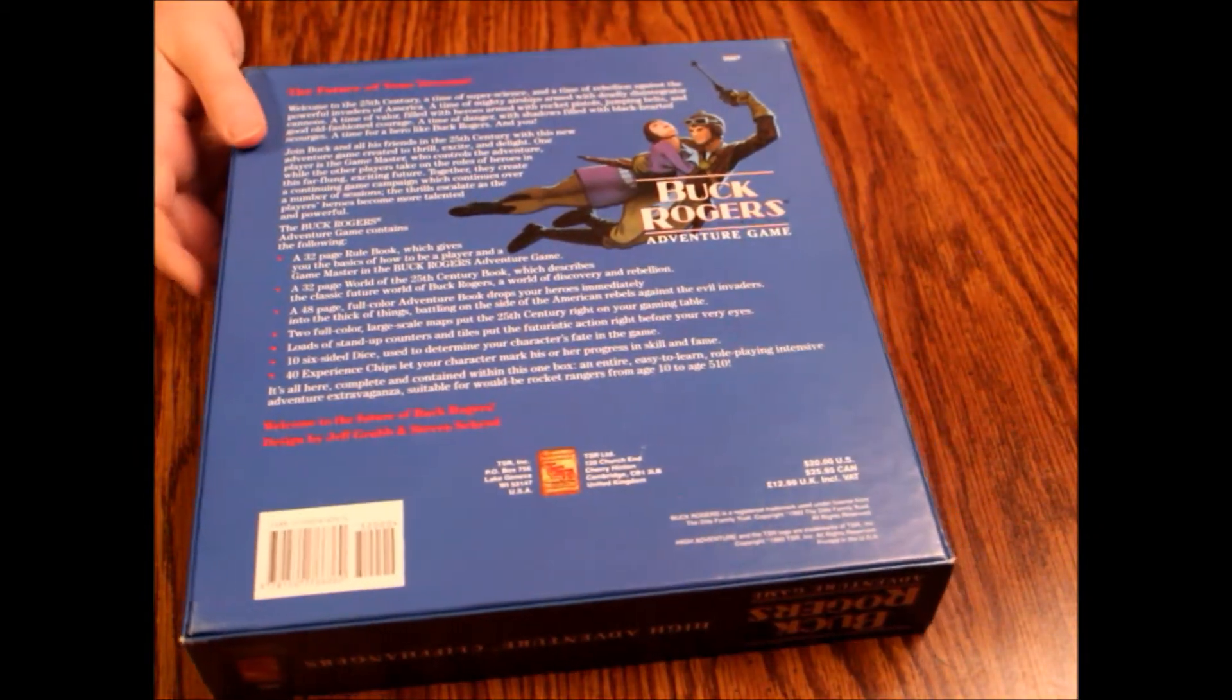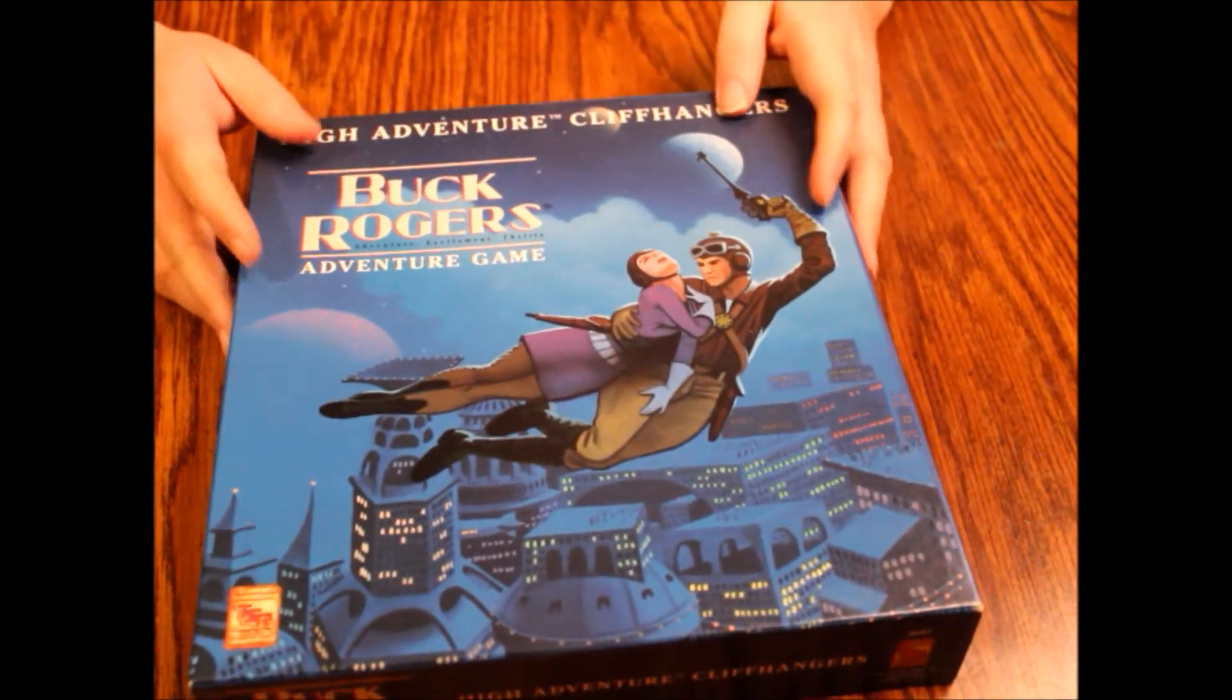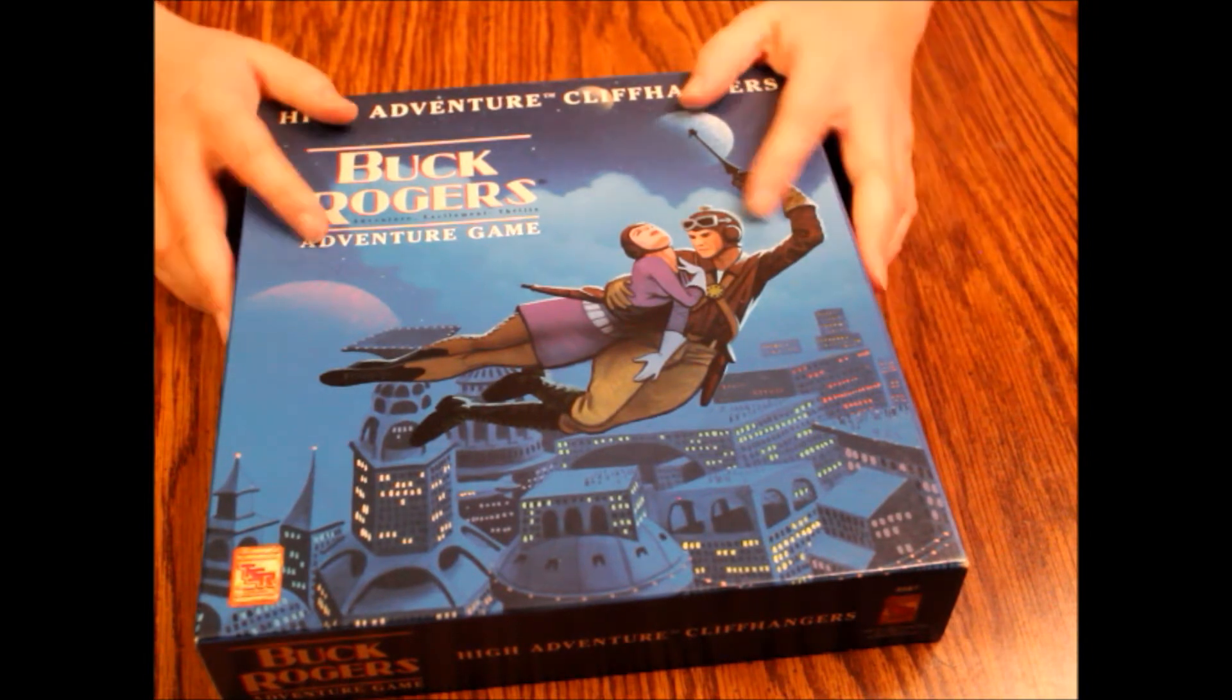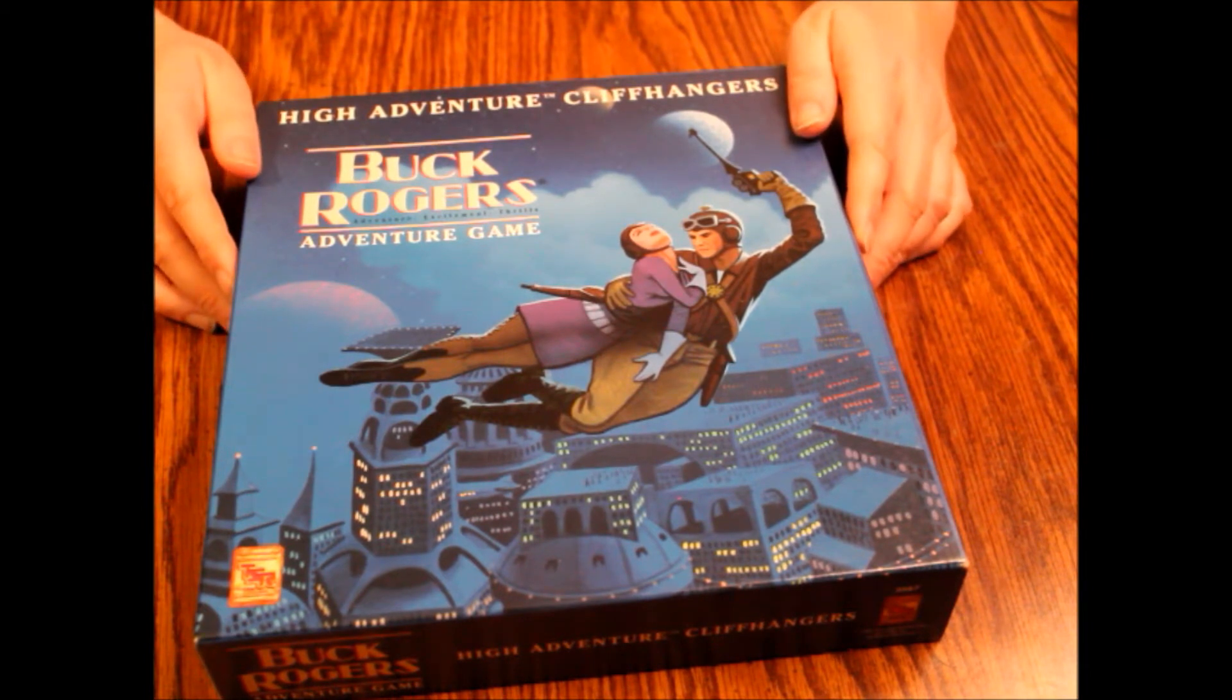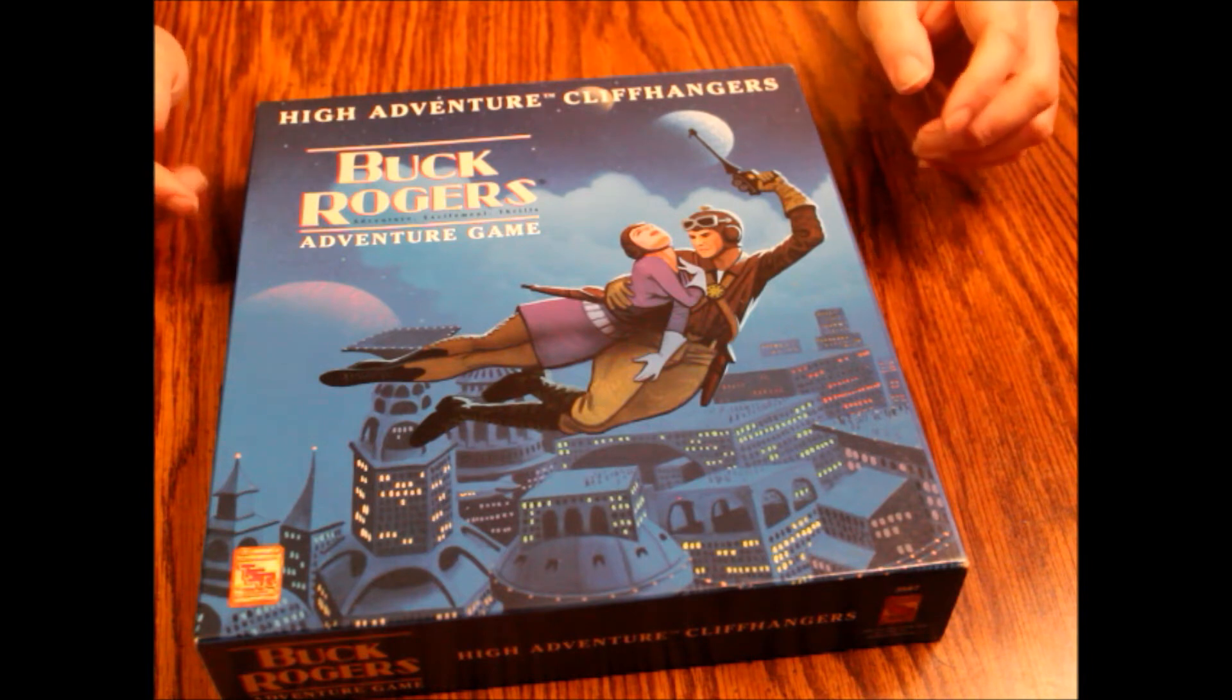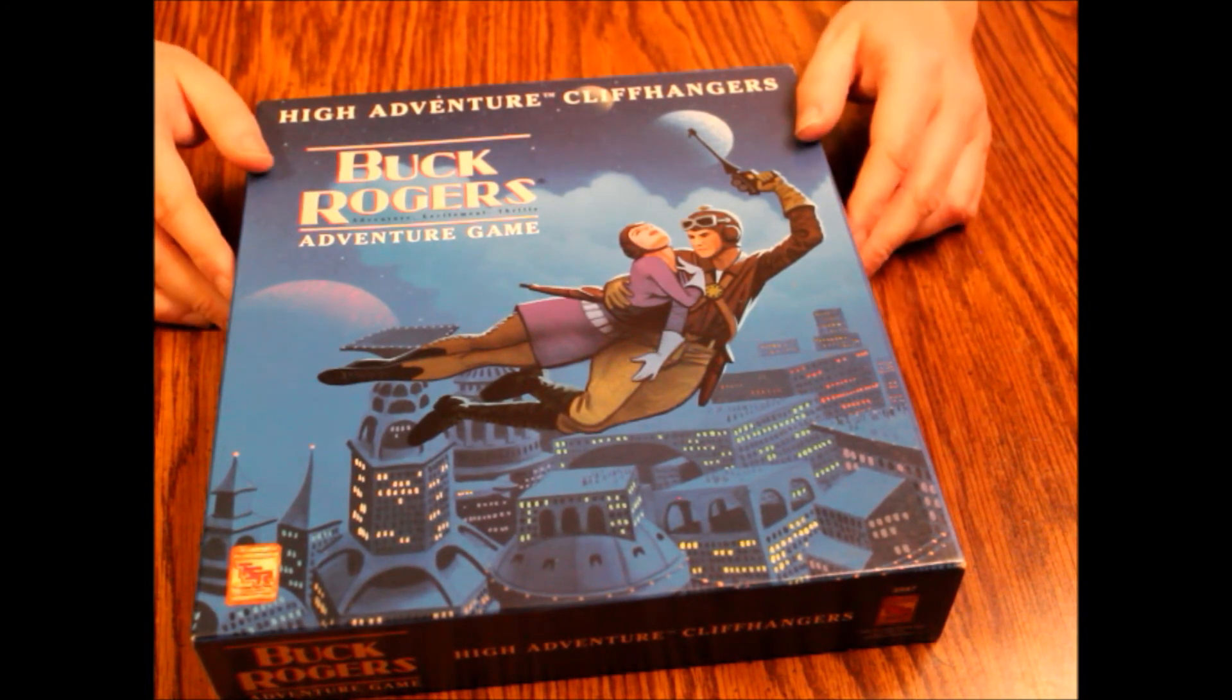This is definitely one that never really took off, and I'm really sad to see that honestly, because I think the setting is really cool. The maps are really thin—those are probably what's going to be destroyed. Be sure to check out and make sure all the pieces are there for the standees. That'll do it for this episode. This has been High Adventure Cliffhangers, the Buck Rogers Adventure Game from TSR in 1993, and we've seen what's inside. That'll do it for this episode. As always, thanks for watching, and we hope to see you next time on What's Inside.